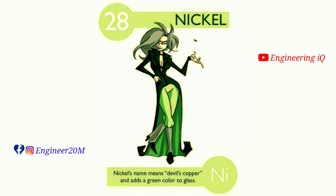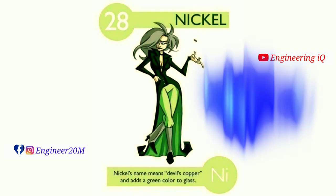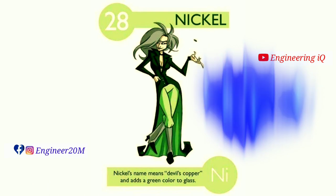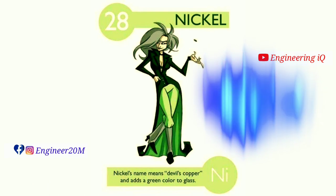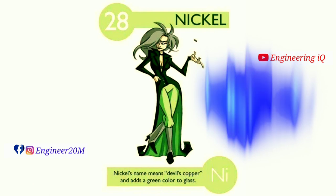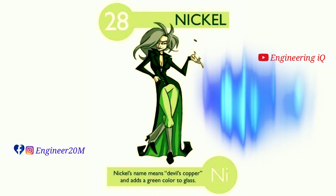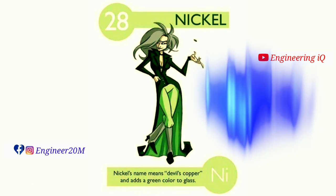Nickel: atomic number of nickel is 28. Nickel's name means devil's copper, and it adds a green color to glass. It is denoted by Ni.